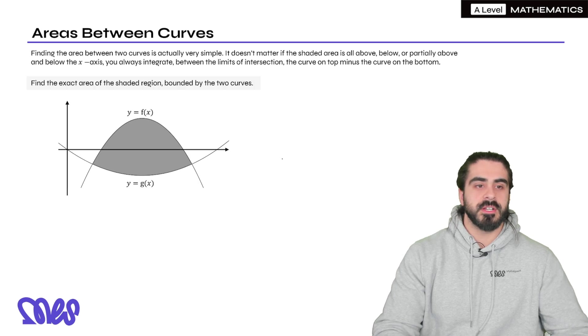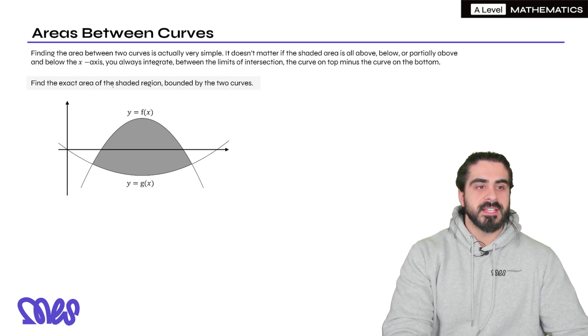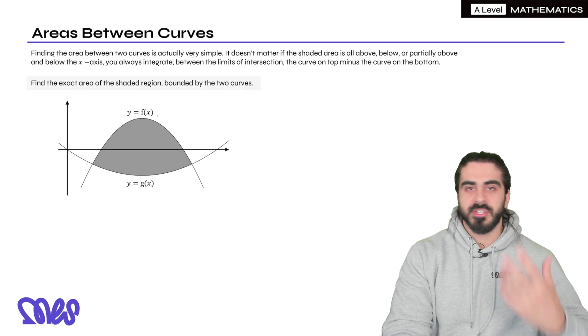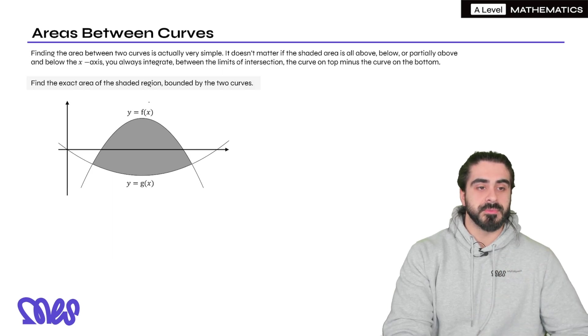I'm going to show you how it works in principle. Find the exact area of the shaded region bounded by these two curves. So here we can see I want to find this area. Now this area here is a mixture, part of it is above and part of it is below the axes.